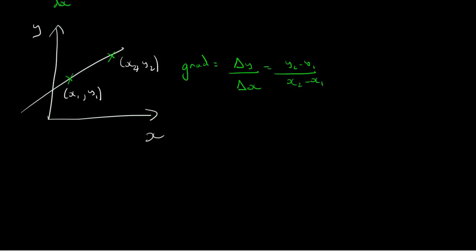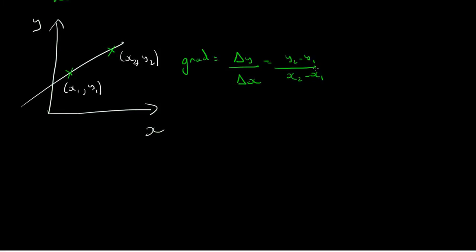So this is a general formula that allows us to calculate the gradient of a straight line that passes through two points.